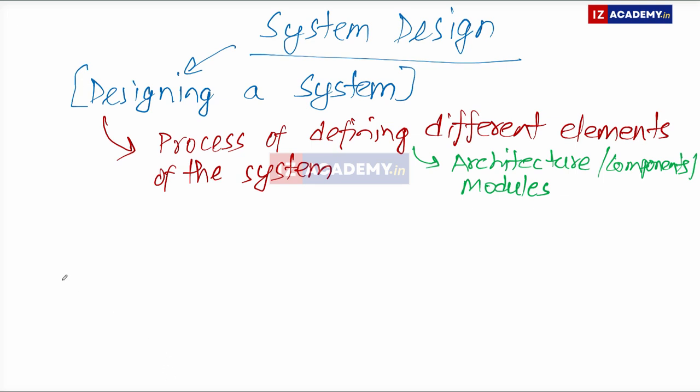So how do we define all these different elements? When we are defining these elements like the architecture, the different components, we should break it down into smaller components and modules so that it is easy to work on a problem statement. If we don't divide it into small things, we cannot just make everything together. We have to make it in small parts, we have to divide the work in different teams. That is why system design is important.